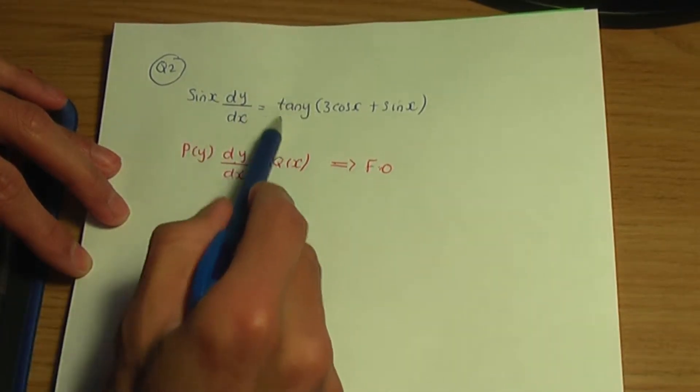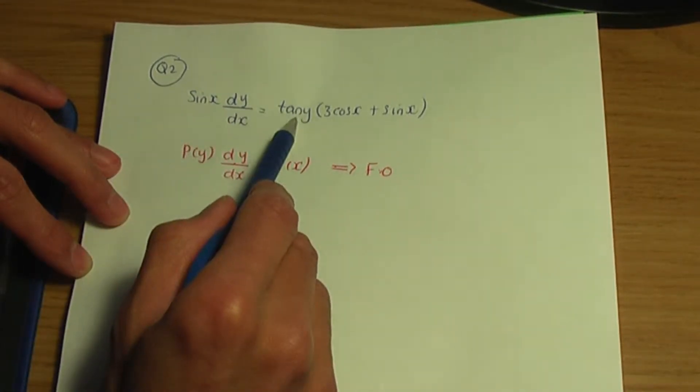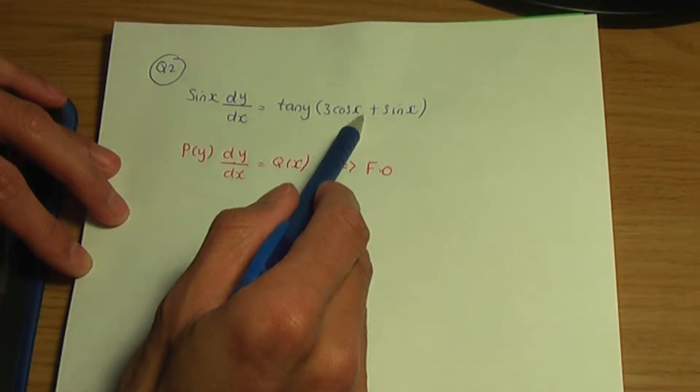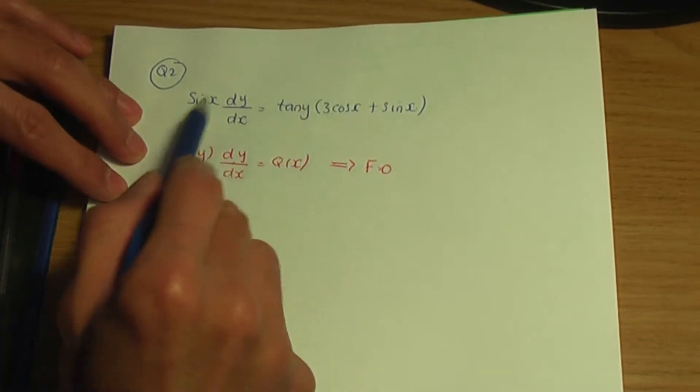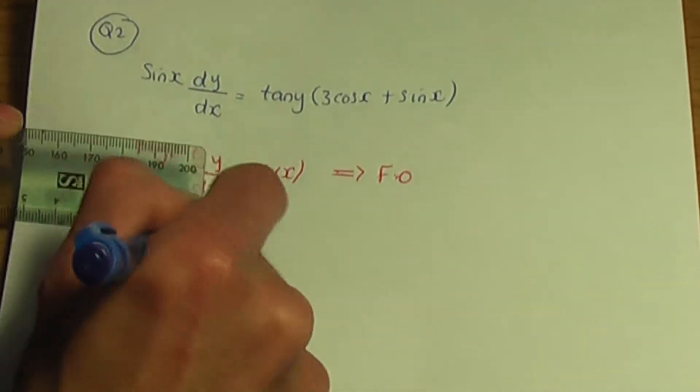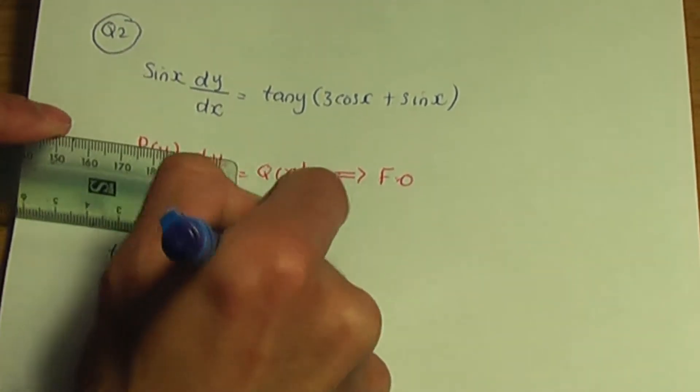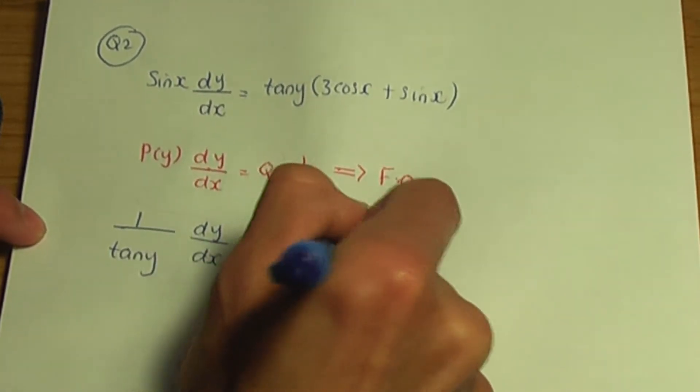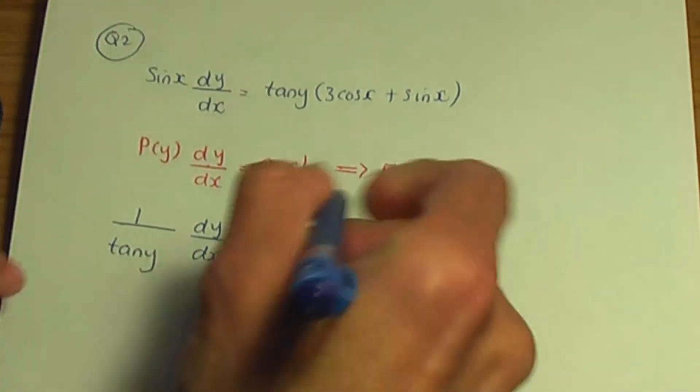So first thing that I'm going to do is, if I take the tan y to the left, so if I divide both sides by tan y, and at the same time, if I take this sin x term to the right by dividing both sides by sin x. So in other words, if I divide by sin x tan y, we're going to have 1 over tan y times dy over dx, and that is equal to (3 cos x plus sin x) all over sin x.